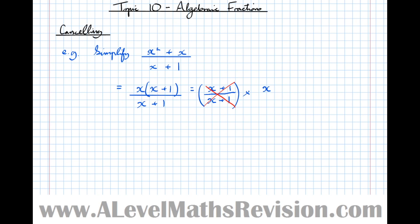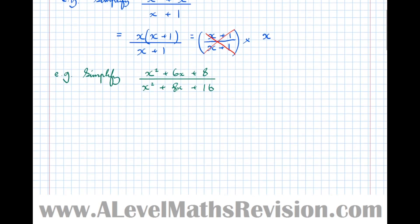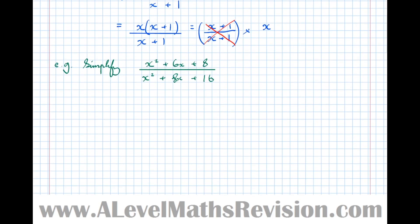Factorise it. Reorder the fraction so that you end up with something over itself at the front. Let's try another one: simplify x squared plus 6x plus 8 over x squared plus 8x plus 16.